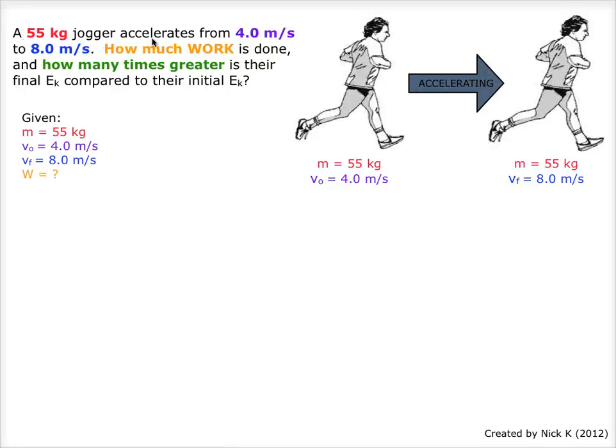A 55 kilogram jogger accelerates from 4.0 meters per second to 8.0 meters per second. How much work is done and how many times greater is their final EK compared to their initial EK?